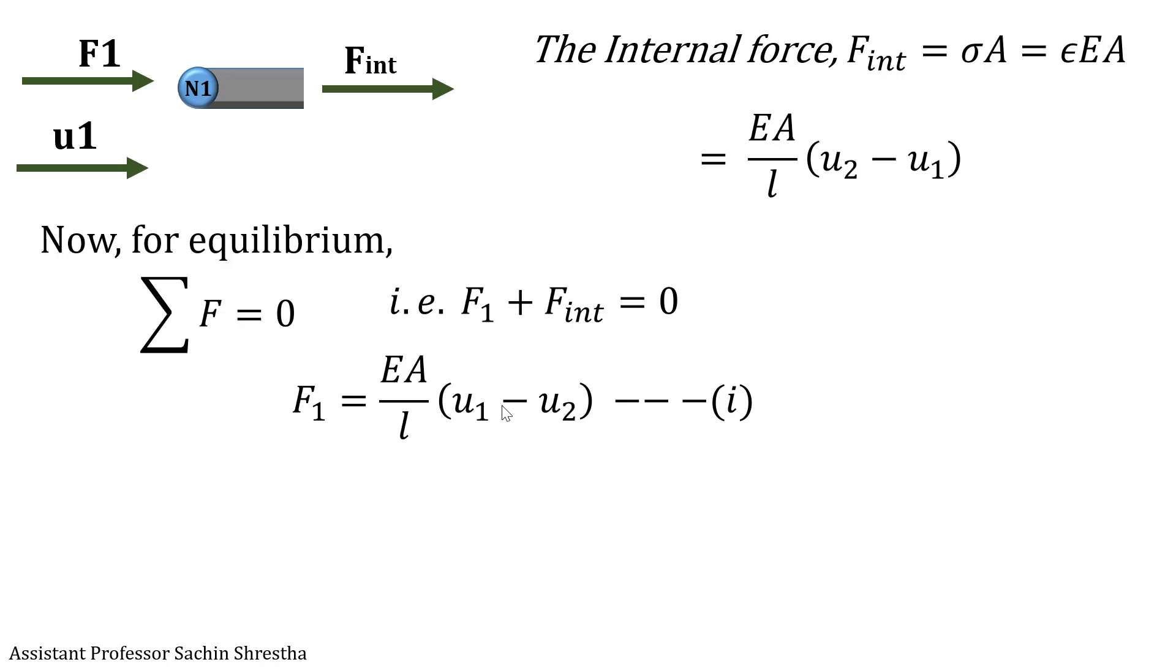Similarly, we can obtain the relationship for F2, which will be EA by L times (U2 minus U1). Rearranging U1 and U2, we will have F2 equals EA by L times (minus U1 plus U2).